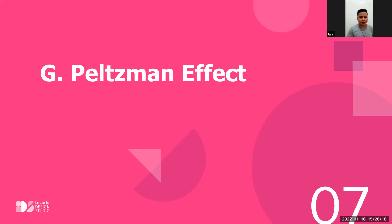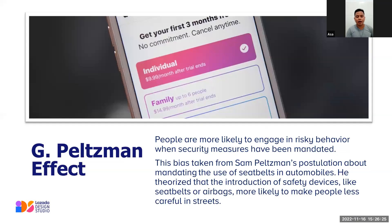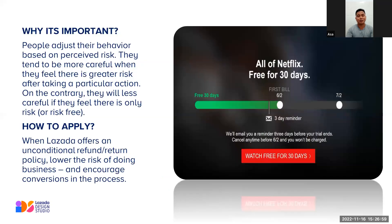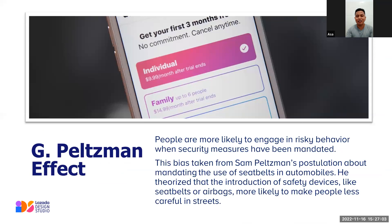Next is the Peltzman Effect. People are more likely to engage in risky behavior when security measures have been mandated. This bias is taken from Peltzman's postulation about mandating seatbelts in automobiles — he theorized that the introduction of safety devices like seatbelts or airbags makes people drive less carefully, because they feel safe.